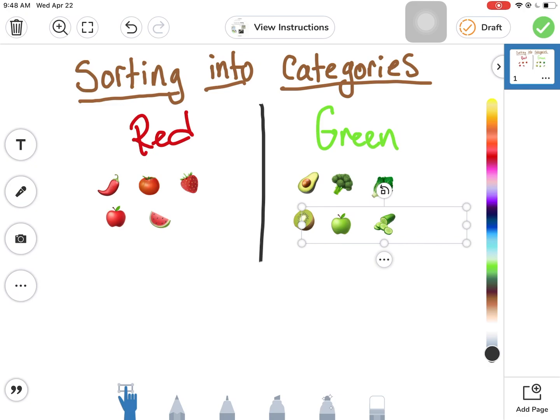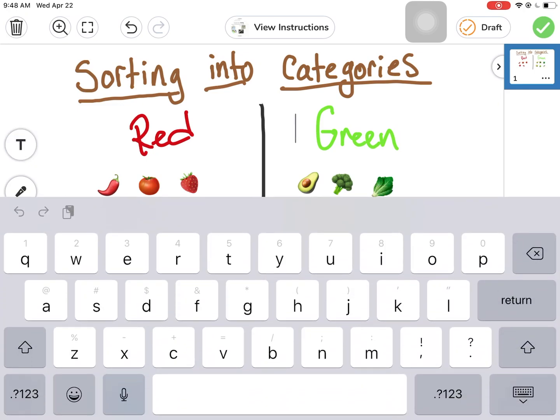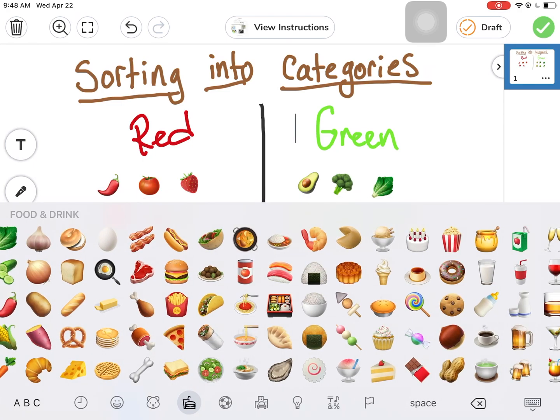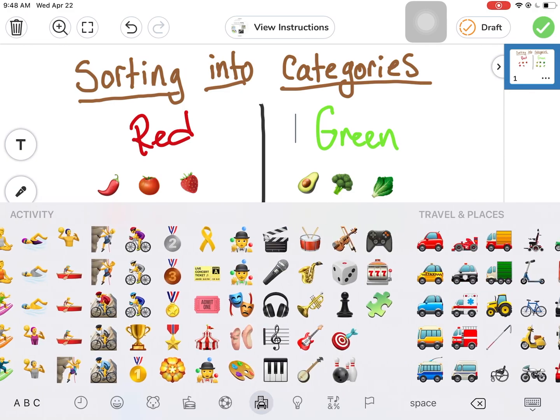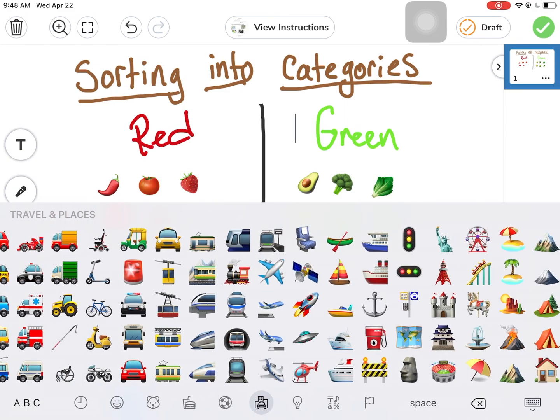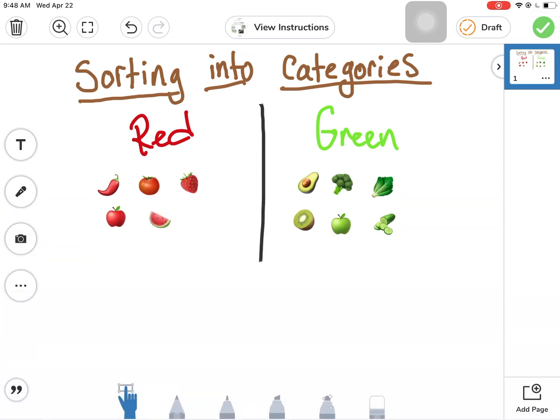Another thing that you could do is go in, pick out a whole bunch of emojis - it could be food, it could be different sports, different vehicles, all sorts of things - and then decide how you want to sort them into categories. All right, good luck.